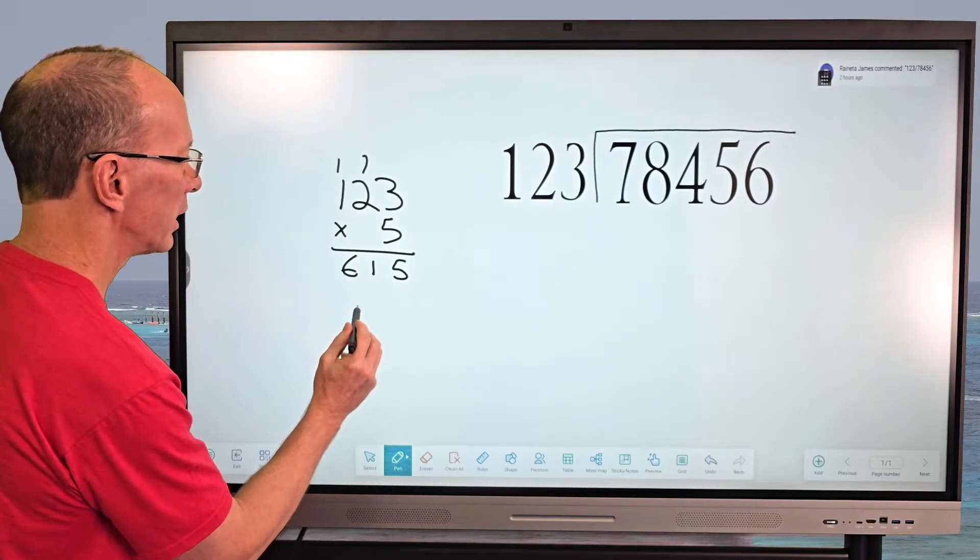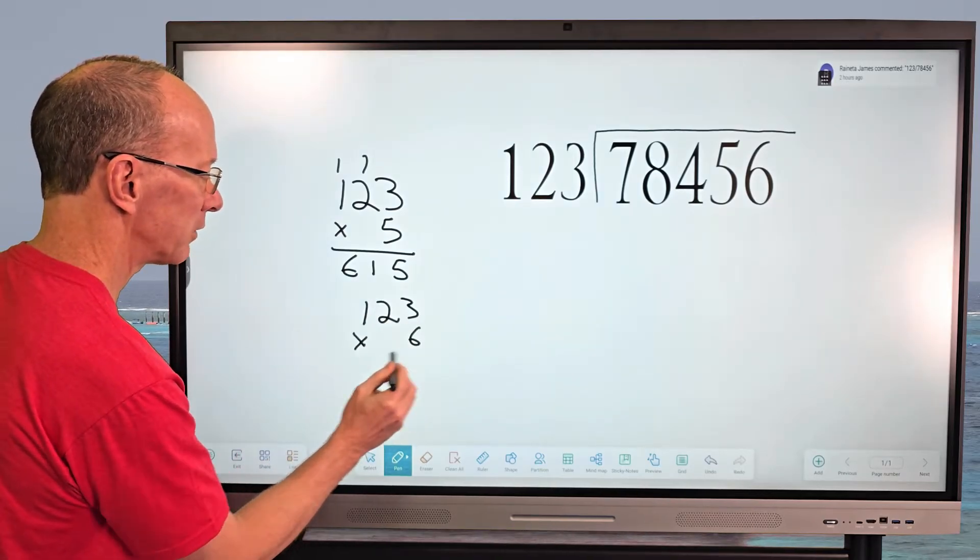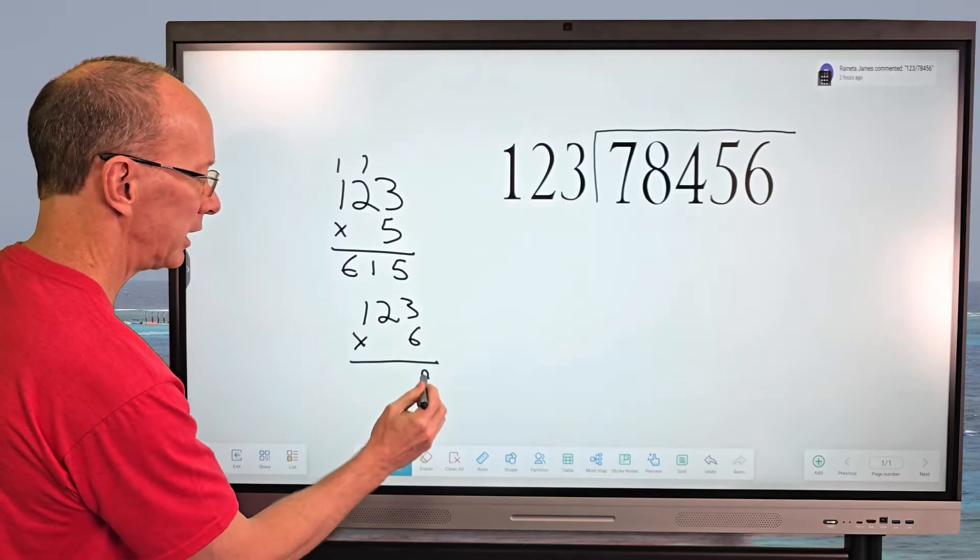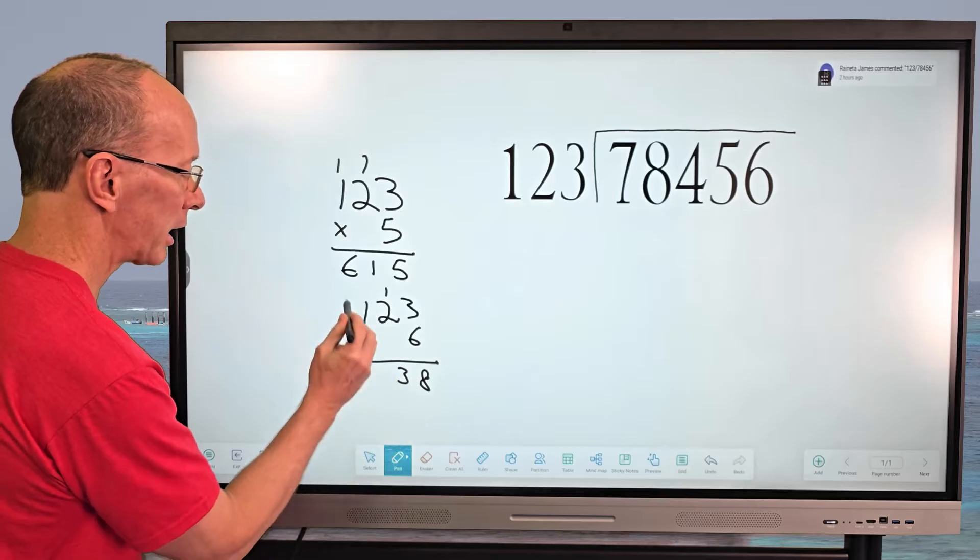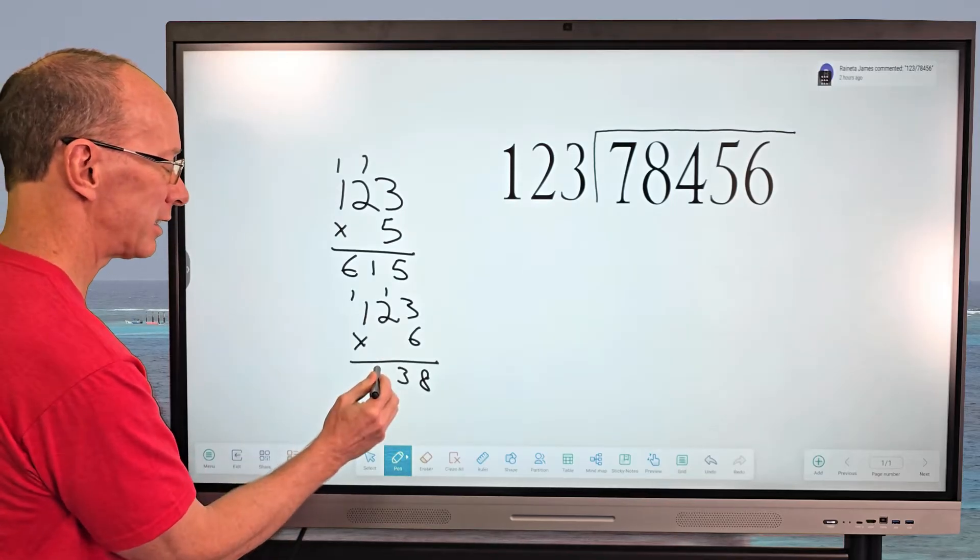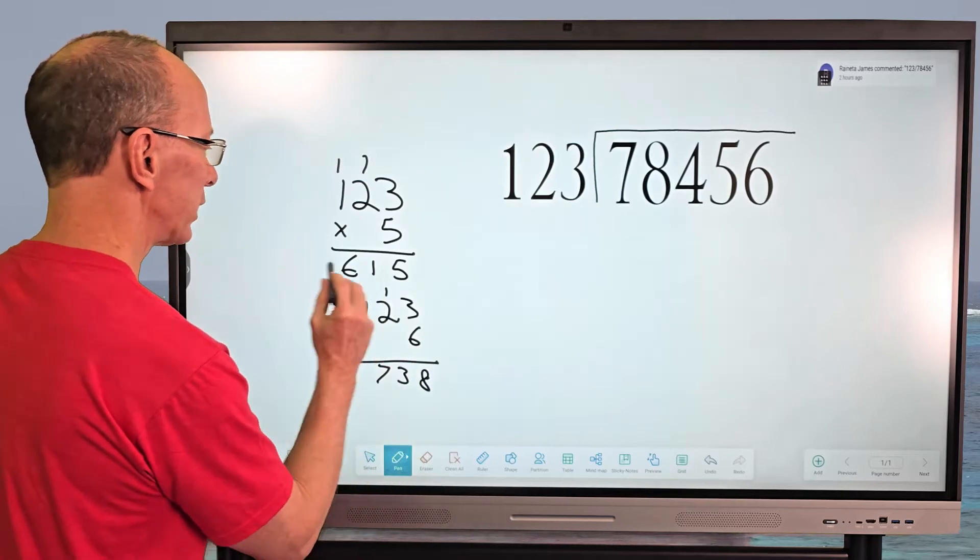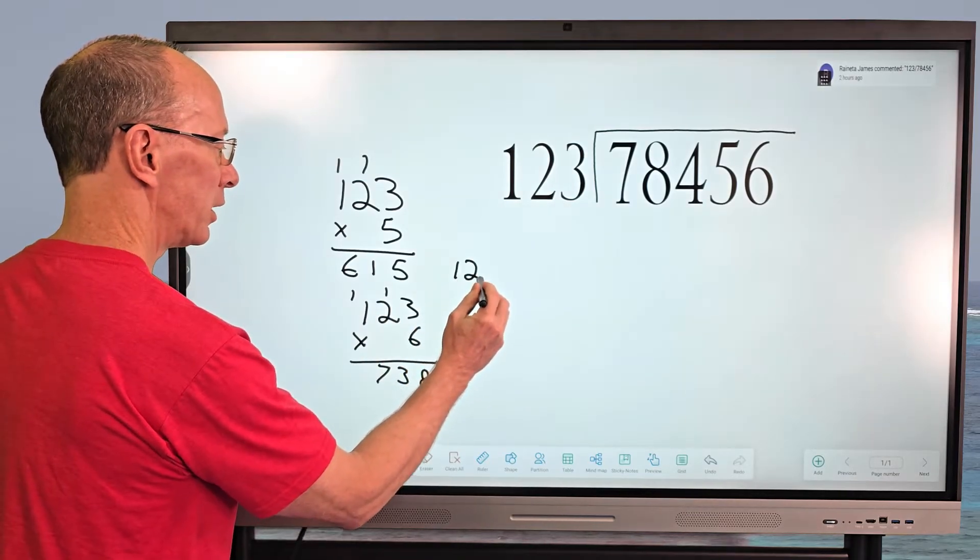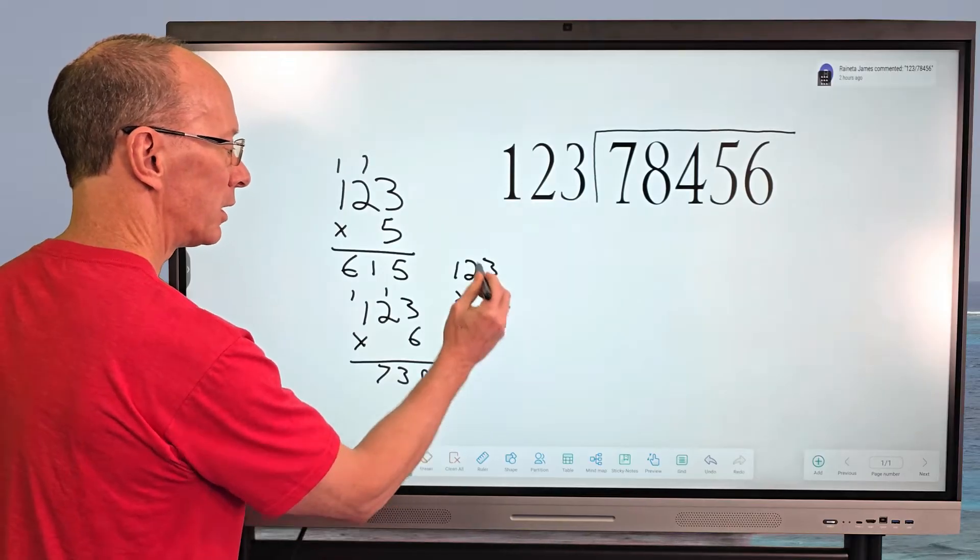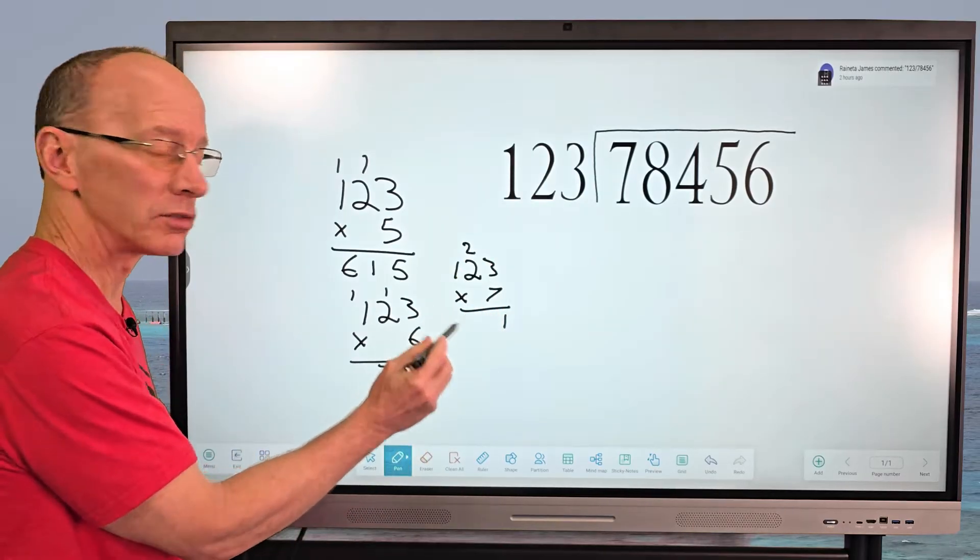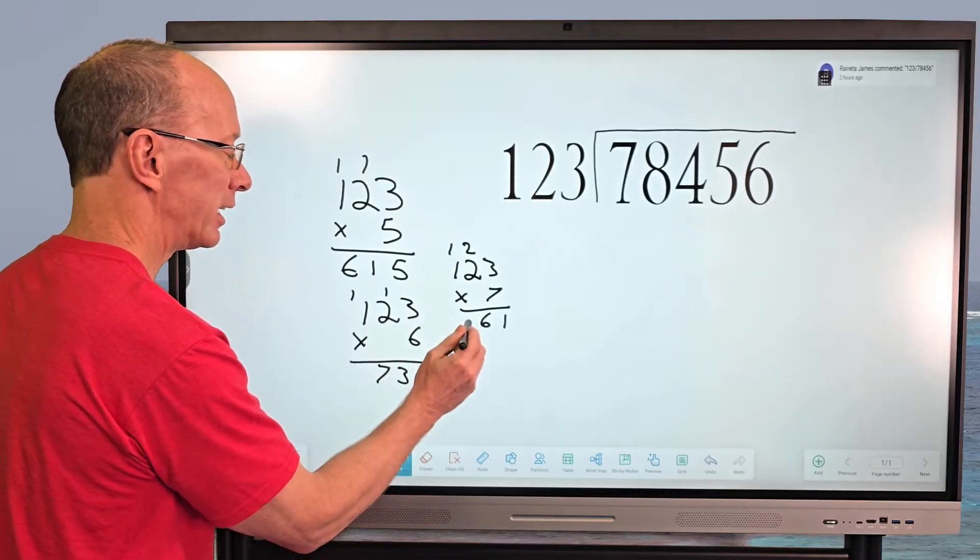So let's try 123 times six. So six times three is 18. Carry the one. Six times two is 12. Plus the one is 13. Carry the one and then six and then seven. And then let's do one more just to show you what that looks like. So I have 123 times seven. So seven times three is 21. Carry the two. Seven and two is 14. 15 is 16. And then carry the one and then seven and then eight.